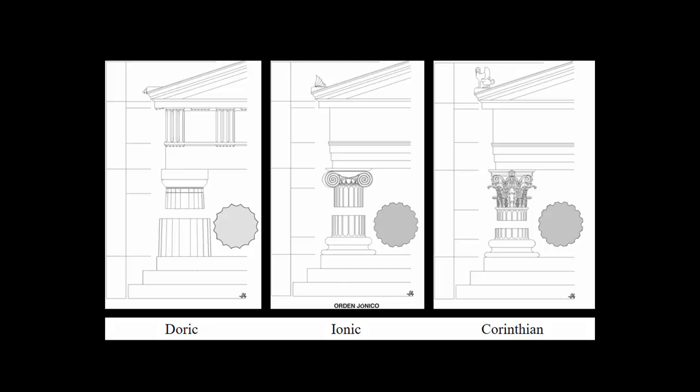In the Doric order, the columns are wider at the base than they are at the capital, and the capital is a simple flare cap — not very decorative. Doric is the simplest of the orders and also the oldest. Doric structures are the most famous and iconic structures in all of Greek art and culture. The Parthenon, the most famous Greek temple, is a Doric temple.